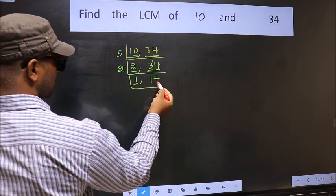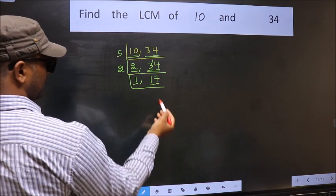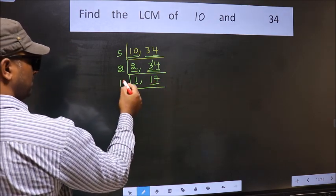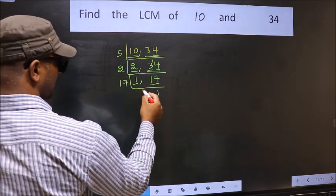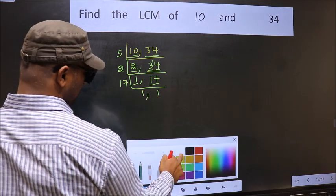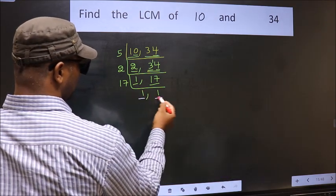Now, we got 1 here. So focus on the other number 17. 17 is a prime number, so 17 times 1 is 17. We got 1 in both the places.